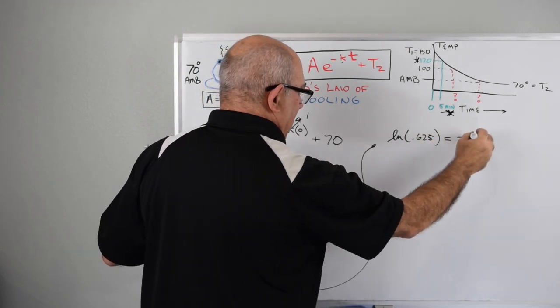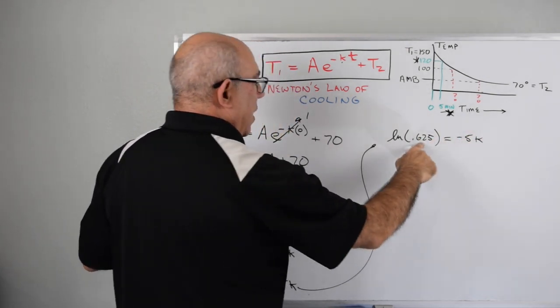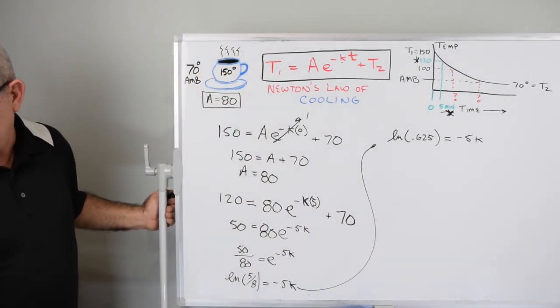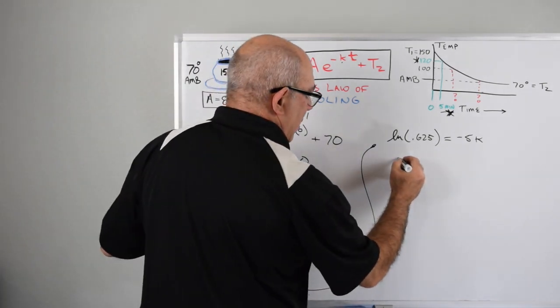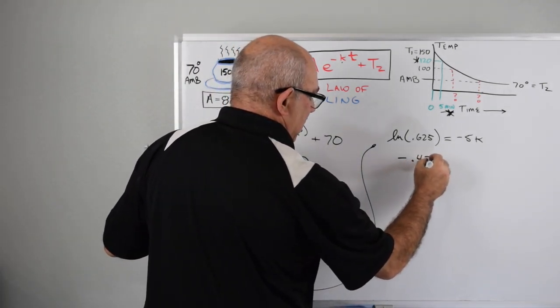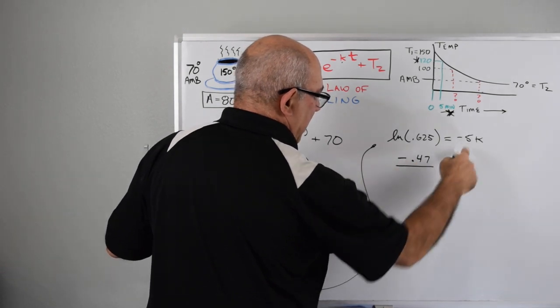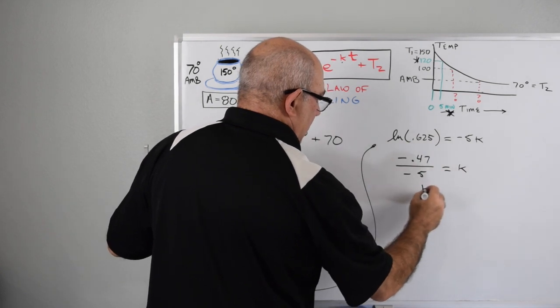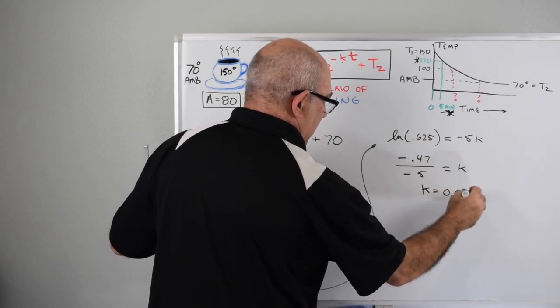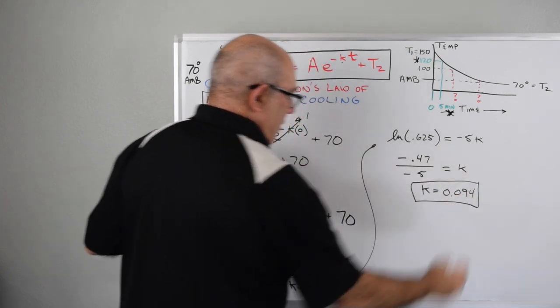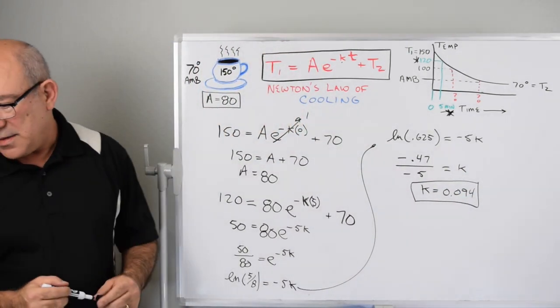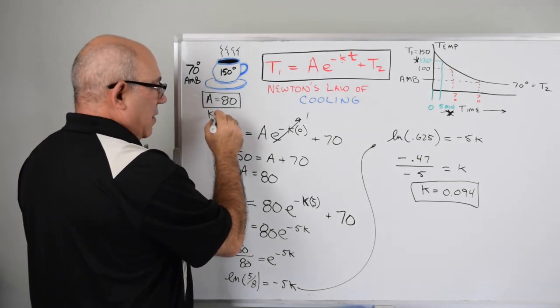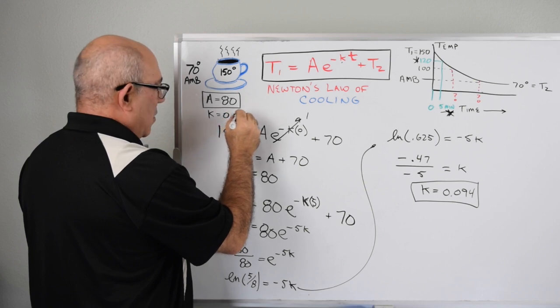That equals minus 5K, and the log of 0.625 is minus 0.47. We're going to divide by minus 5 and that equals K. So K equals 0.094. Now we have the equation fully defined.